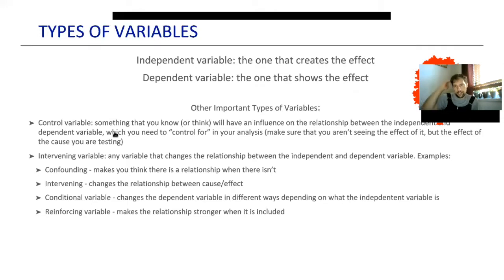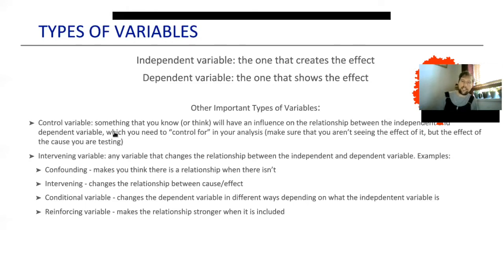If I'm interested in happy plants around me, then the dependent variable is what I'm interested in. So it's pretty simple. You can remember independent variable like this: adolescents are very independent, they're always testing the boundaries, and they're seeing the results of what they do. That's how I remember independent variable — very independent adolescents testing boundaries to see what happens to their dependent parents.